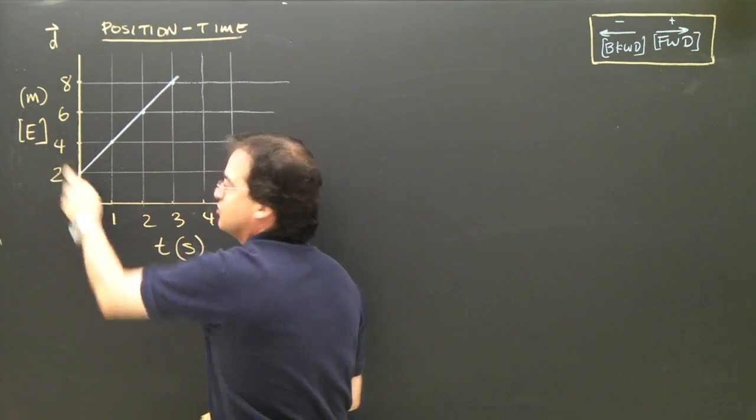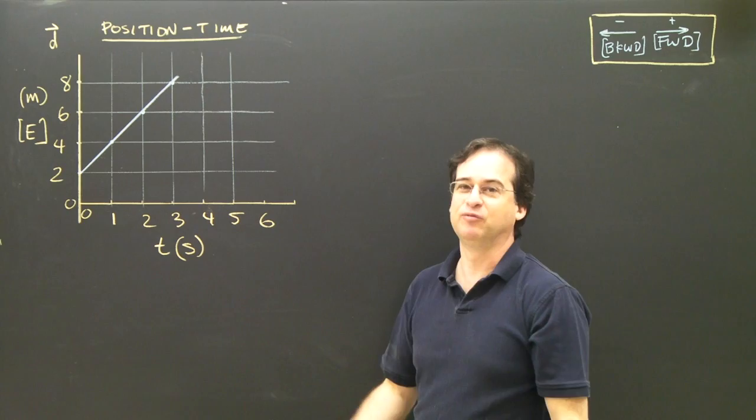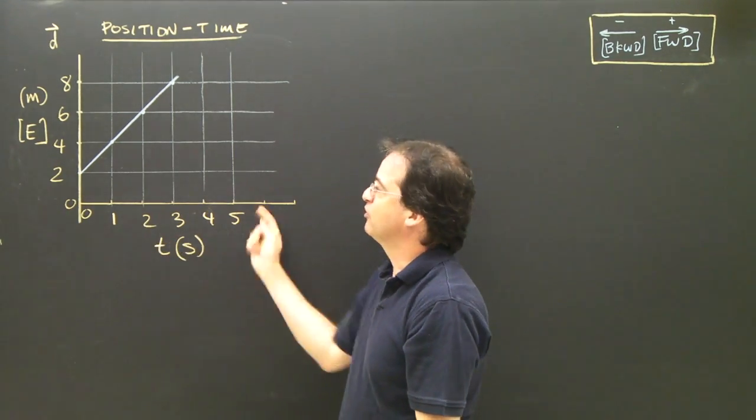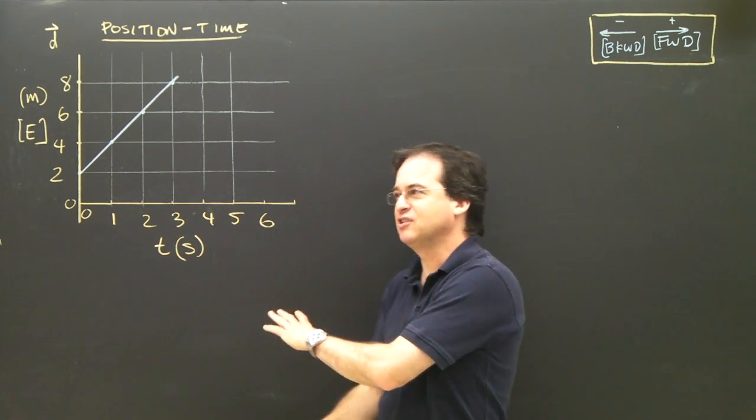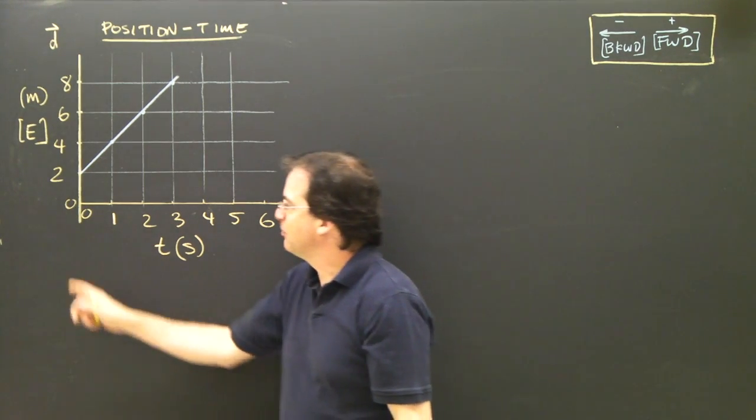And this is east, so positive means east, which would mean negative would mean west. So we take a look at here, and let's just try and describe, using the numbers, what this object is doing.